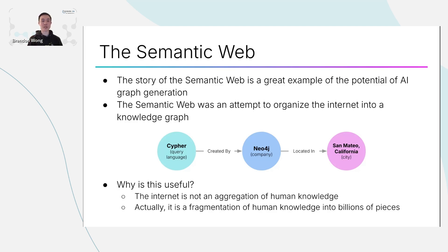For example, Cypher was created by Neo4j, or Neo4j is located in San Mateo, California. This is distinct from the current version of the internet, which has unlinked relationships between typeless pages, so the structure doesn't really make clear what knowledge is stored within it.